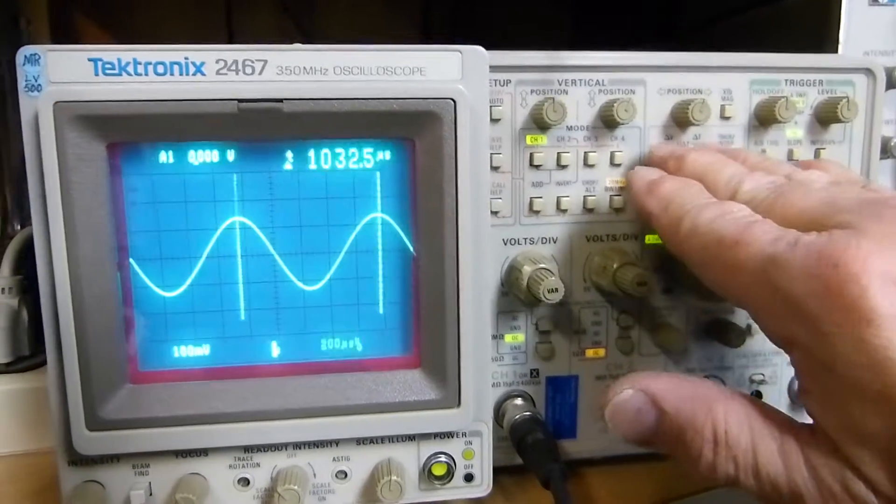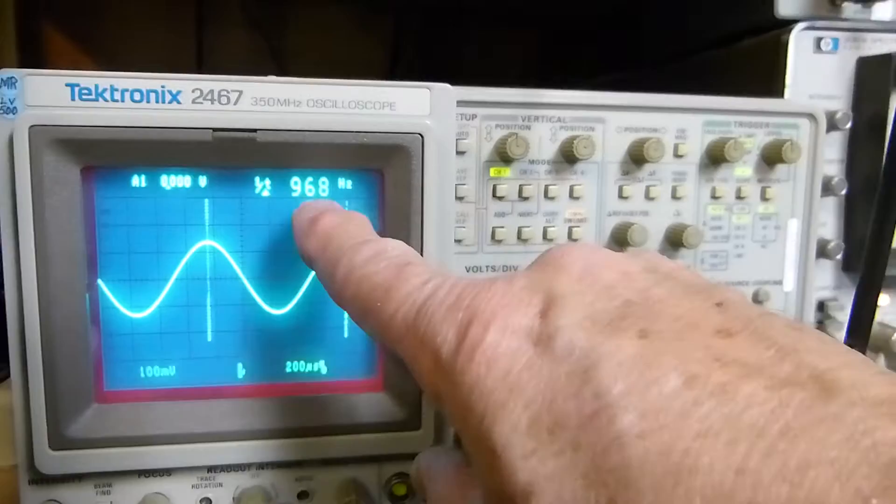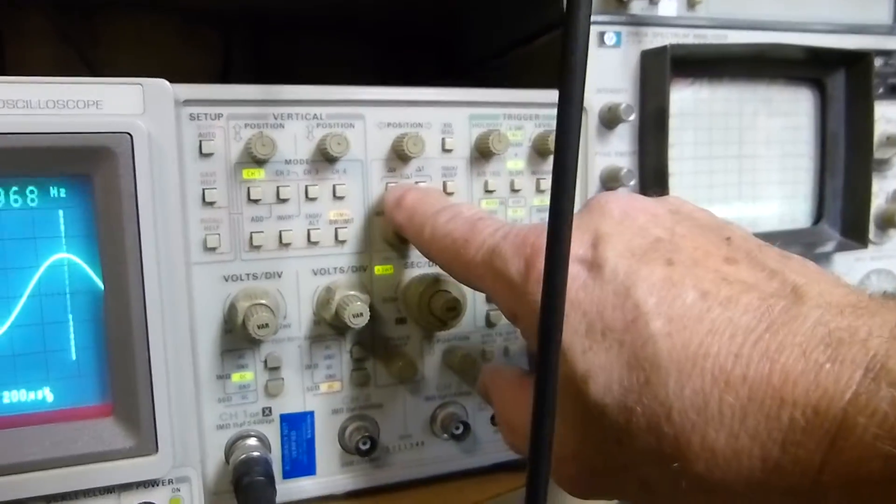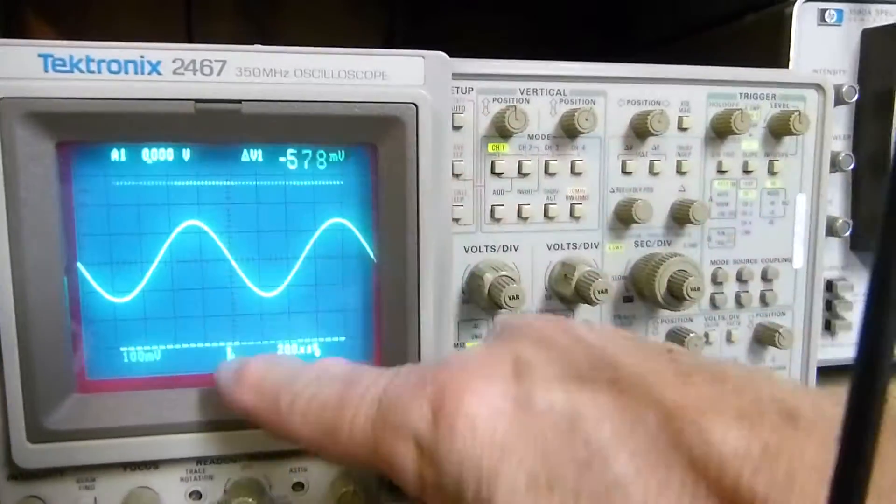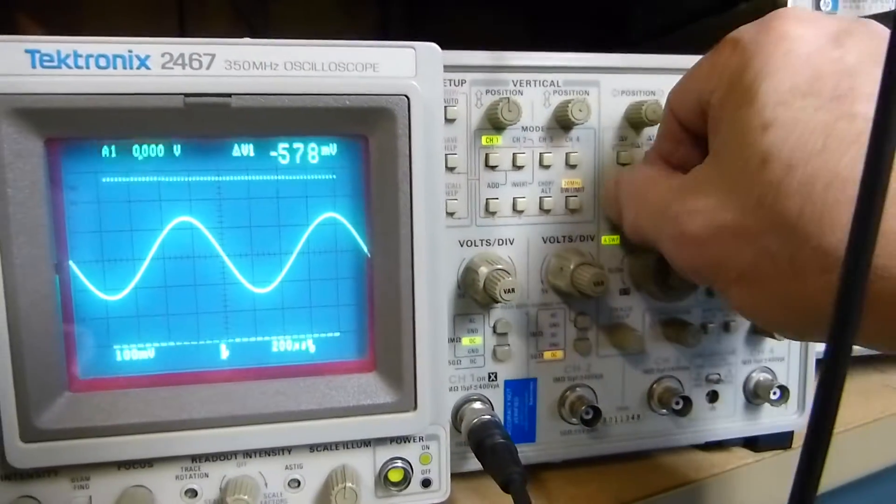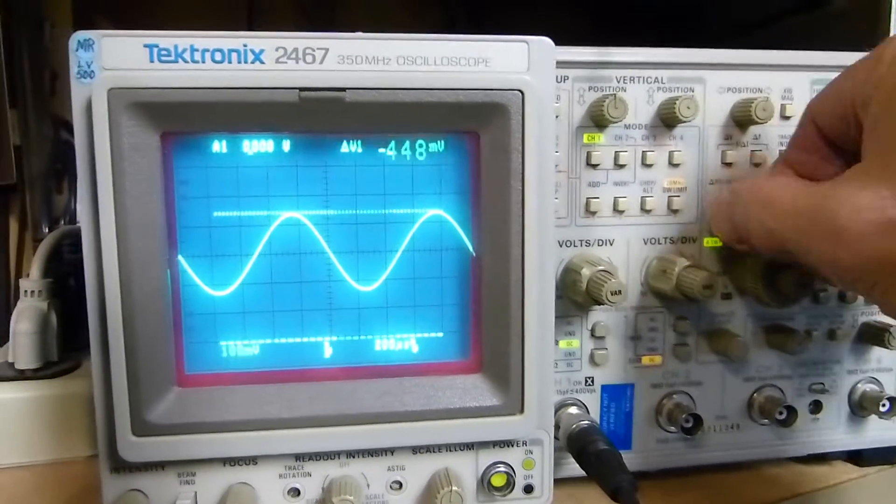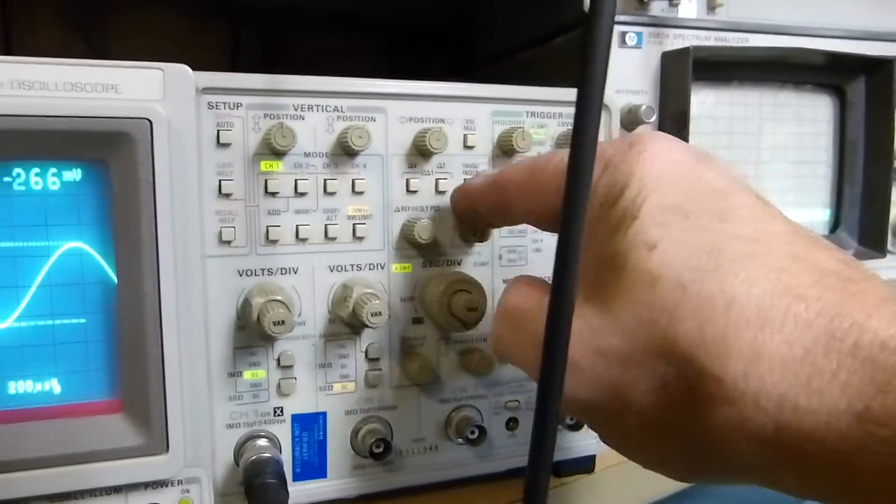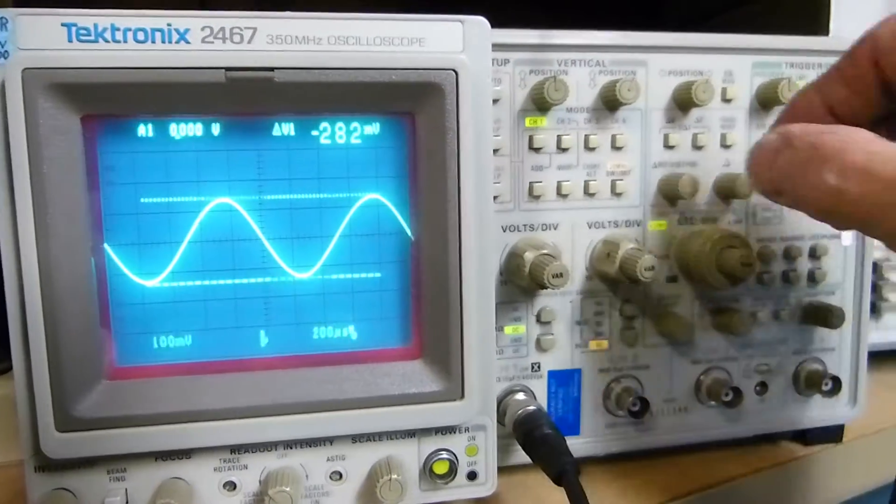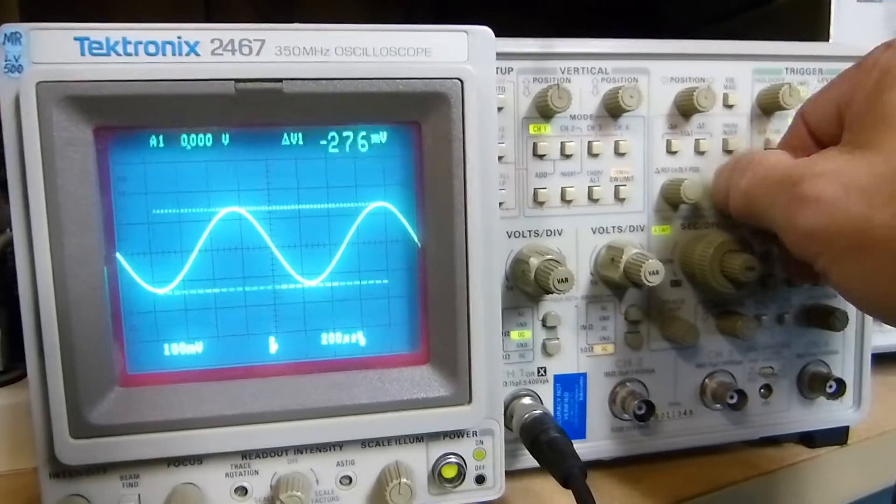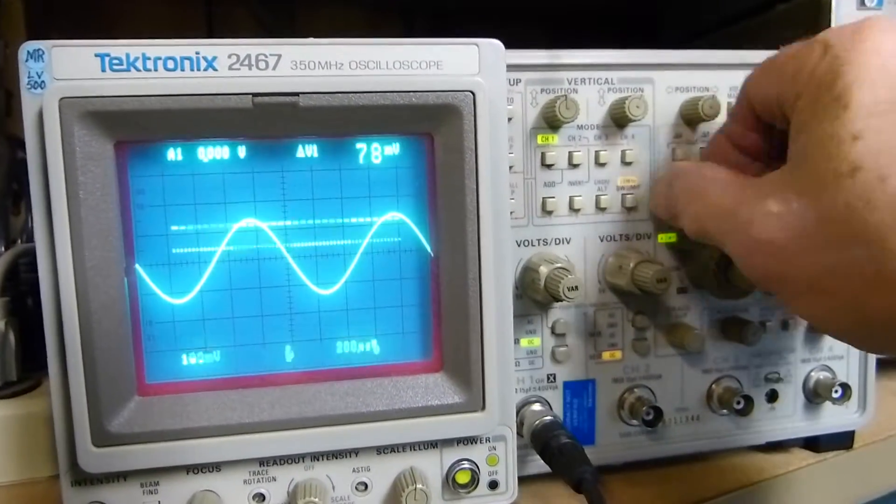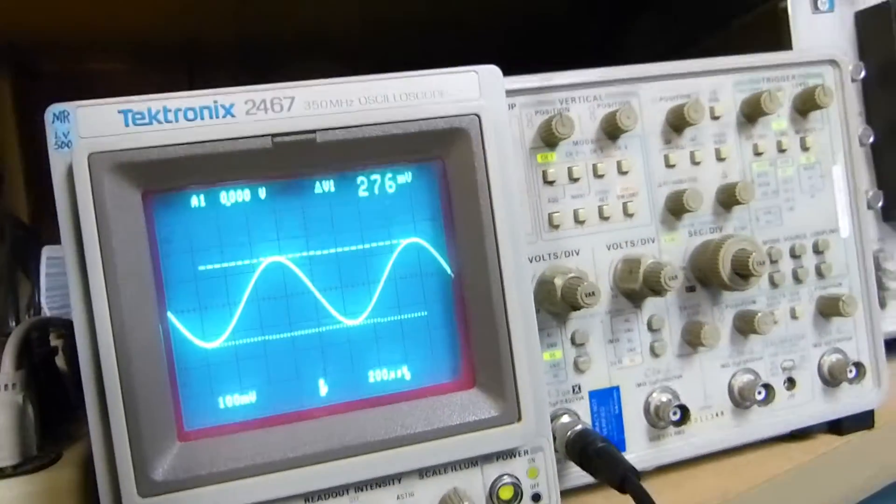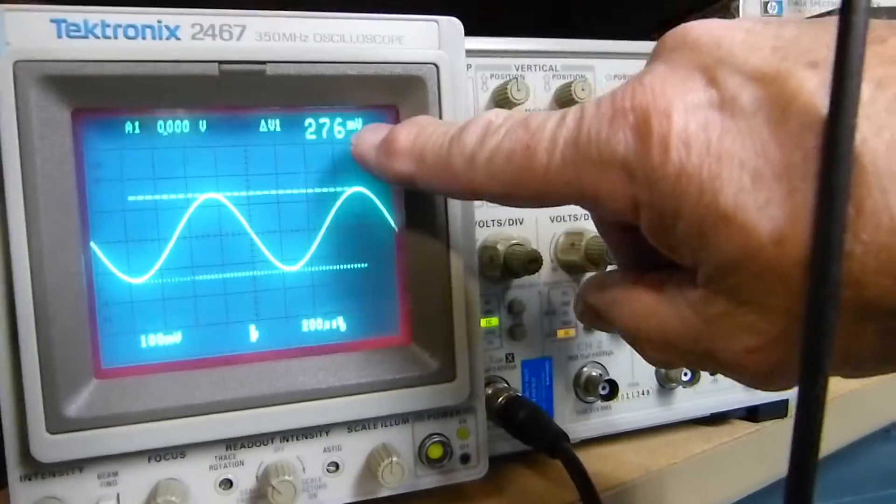If I want to know the amplitude, I just press delta volts right here and the cursors change to vertical. Then I can put the top one right there and the bottom one right there by turning these two knobs. It says 276 millivolts peak to peak.